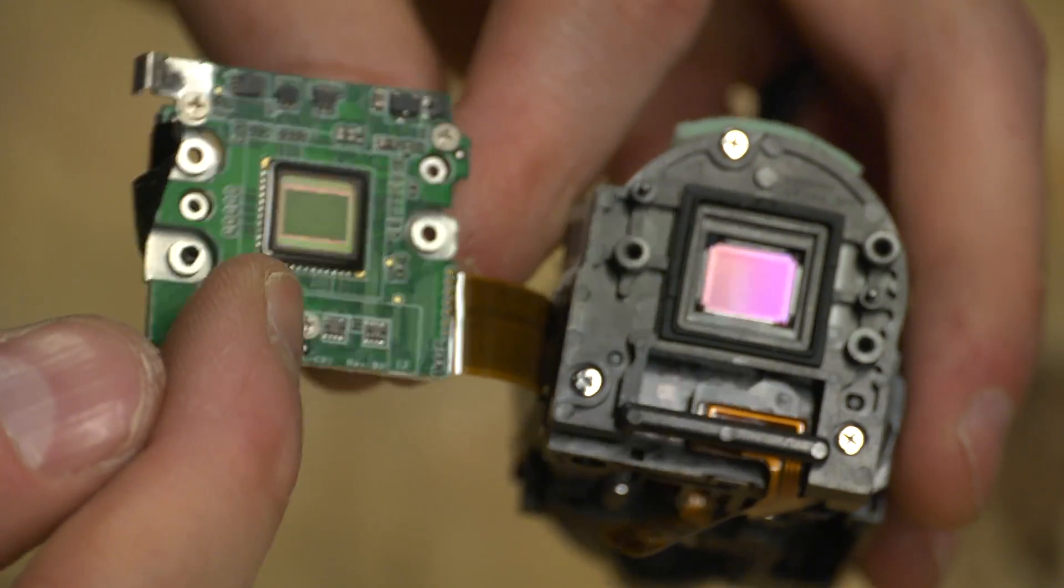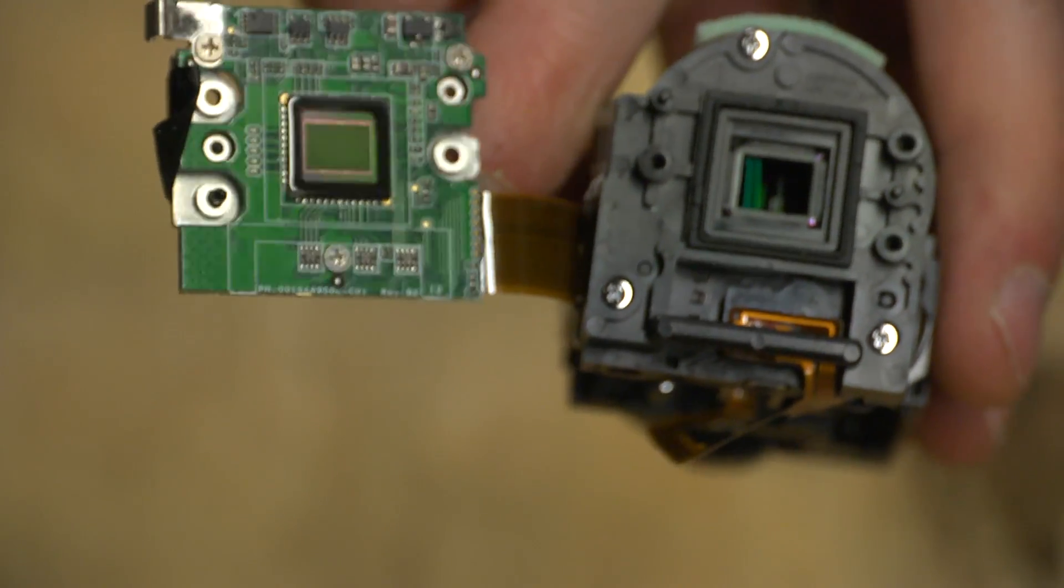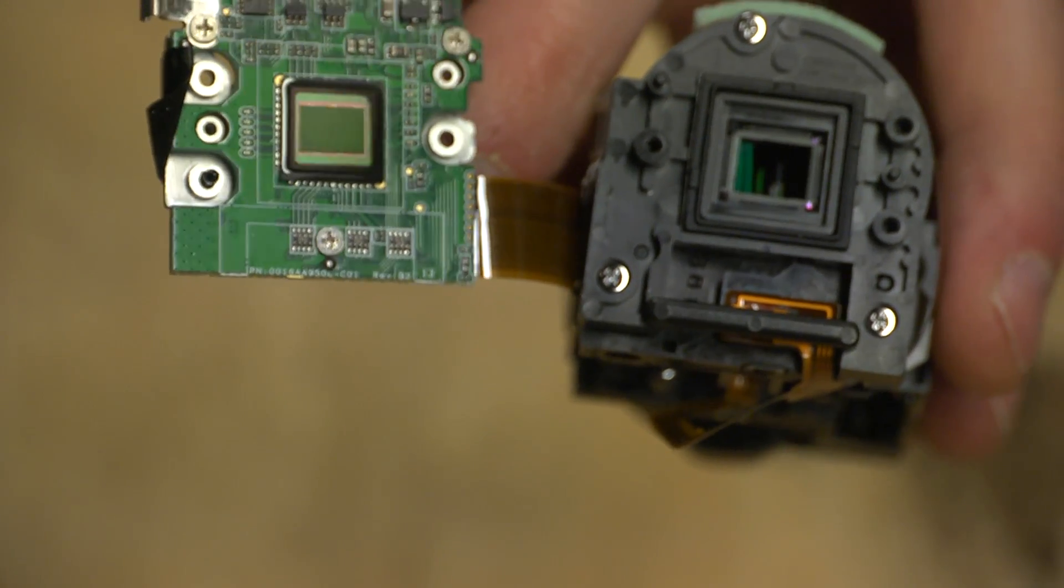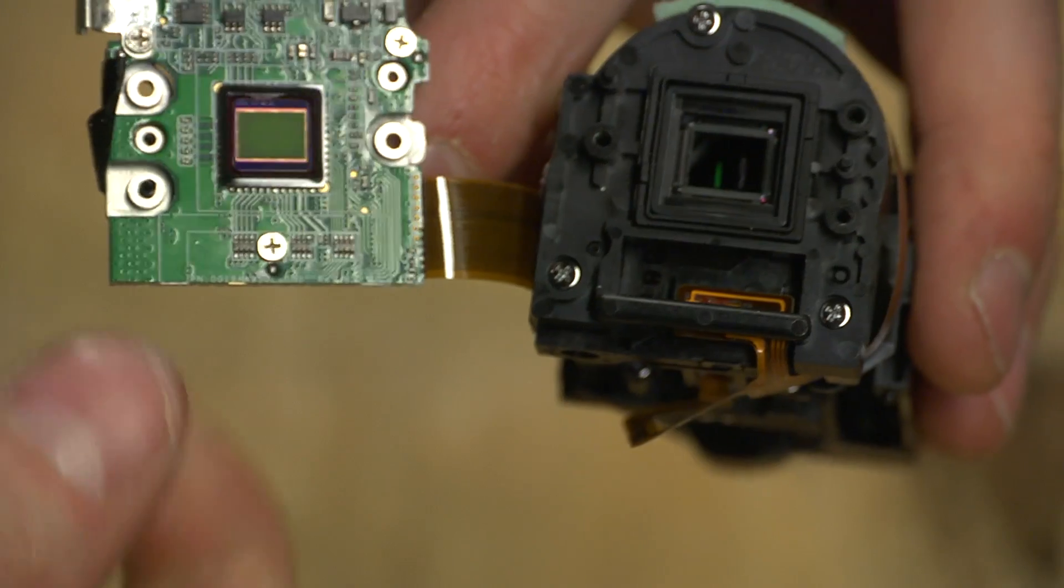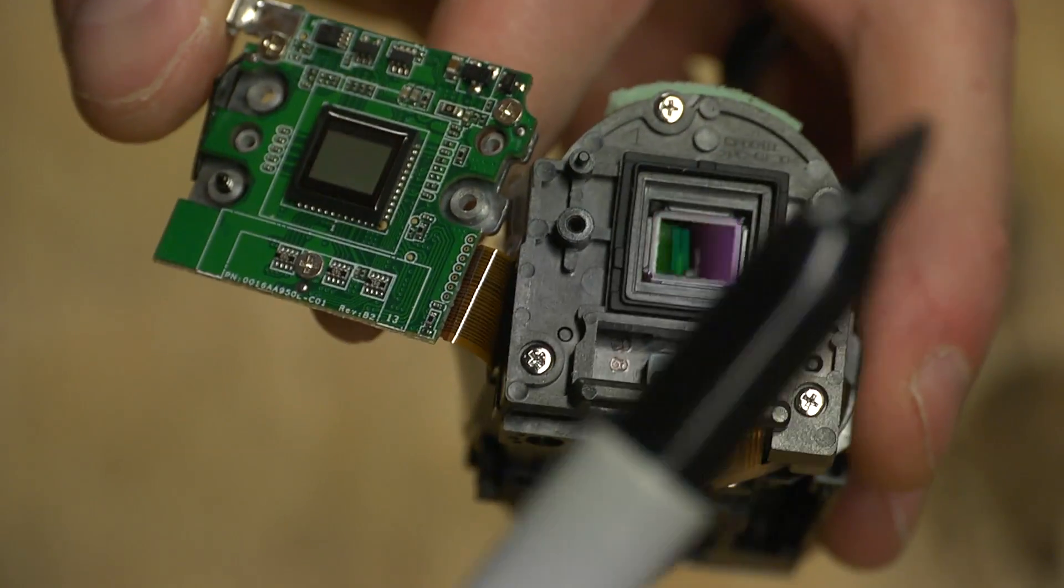Here's the sensor to give you an idea about how big it is. Let's see, here's a Sharpie. So it's pretty small.